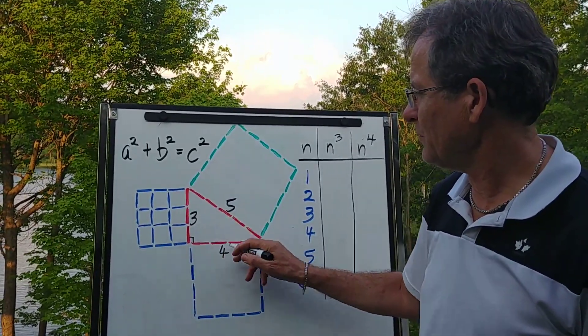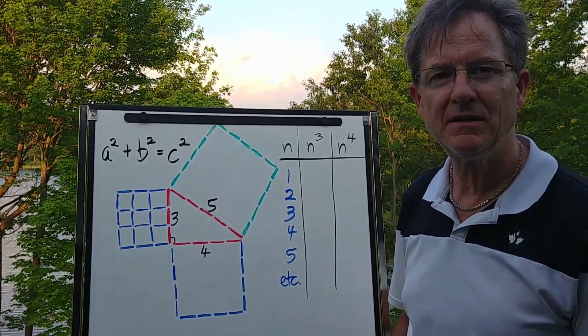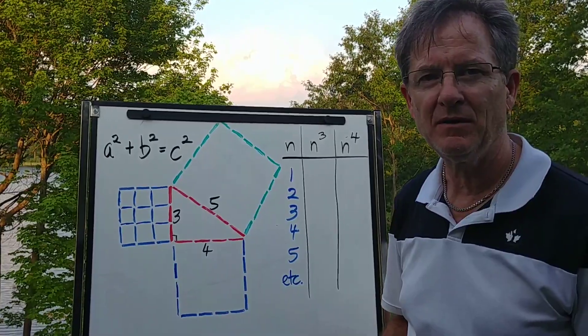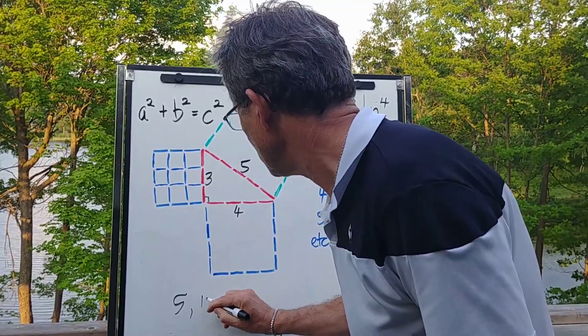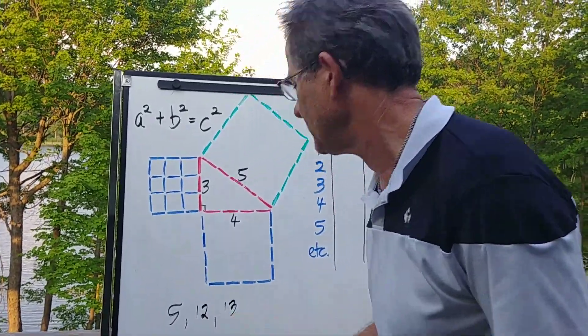There are other numbers like 3, 4, 5 whole numbers that satisfy the Pythagorean equation. For example, 5, 12, and 13.